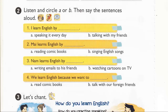Page 50. Activity 2. Listen and circle A or B, then say the sentences aloud. 1. I learn English by talking with my friends. 2. Mai learns English by reading comic books. 3. Nam learns English by writing emails to his friends. 4. We learn English because we want to talk with our foreign friends.